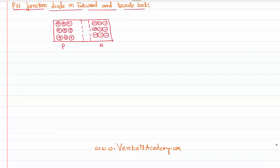The innermost holes experience high repulsion from the other holes and attraction on the other side. Therefore they will shift from the P side to the other side of the junction. Similarly, the innermost electrons from the N side will shift to the other side because there is repulsion at home and attraction on the other side. They will further stop the flow of charges from one side to the other, because these newly shifted charges oppose the flow of new charges.